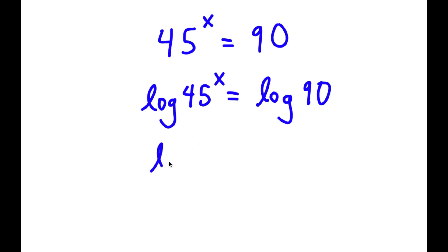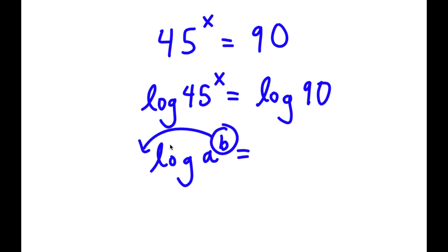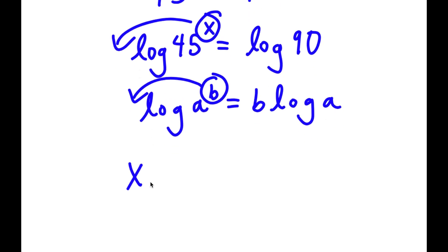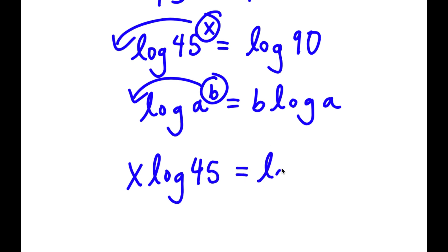If I have something in the form log a to the power of b, I can actually move b to the front. So this is the same thing as b times log a. In this case, I have log 45 to the power of x, and I can move x to the front. So now this is the same thing as x times log 45, which is equal to log 90.